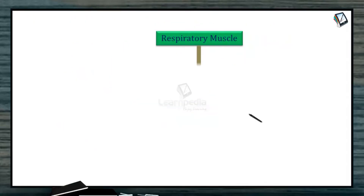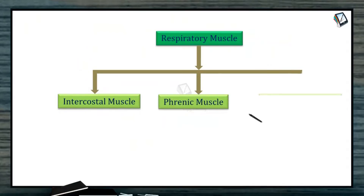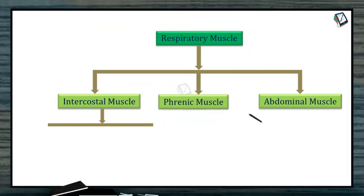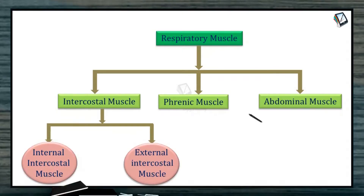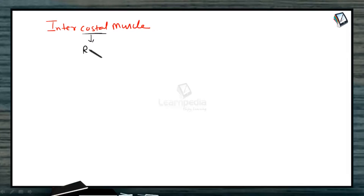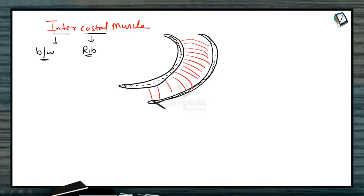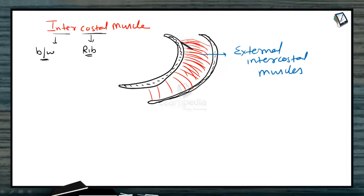Let us now discuss respiratory muscles: intercostal muscles, phrenic muscles, and abdominal muscles. Intercostal muscles are of two types — internal and external intercostal muscles. The word 'costal' refers to rib, and 'inter' means between, so intercostal muscles are present between ribs. Muscles on the outer side of the ribs are called external intercostal muscles; those on the inner side are called internal intercostal muscles.